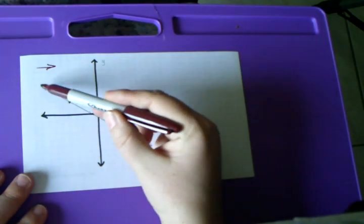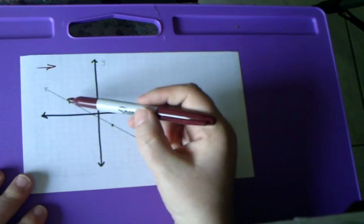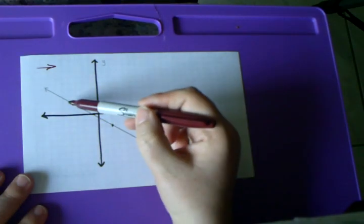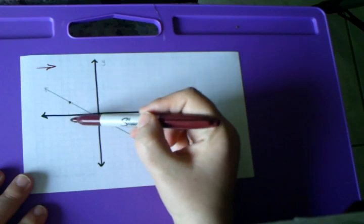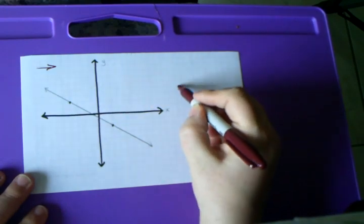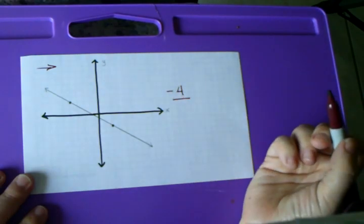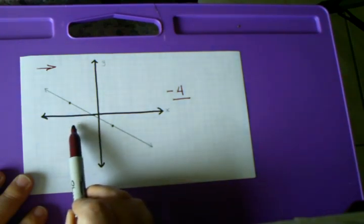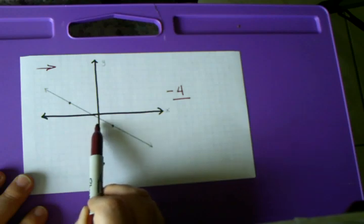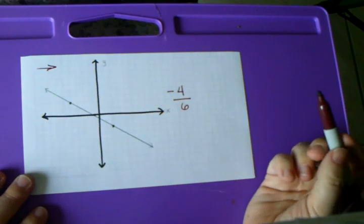I'm always starting at the point on the left. I'm going to count how many lines I have to go down to be even with the next point. Starting here, I go down one, two, three, four. It's always written as a fraction — since I went down, it is negative four. Now from here, I count how many lines I go over until I run into the dot: one, two, three, four, five, six. So my slope is negative four over six.